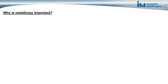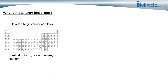So why is this important? This enables us to develop a huge variety of alloys. We have a tremendous number of steel alloys, aluminum alloys, brass, bronze, titanium, and so on. All these different alloys arose out of our understanding of the effects of different alloying elements and thermal mechanical processes on the microscopic structures inside of metals and the effects on the properties of the metals.